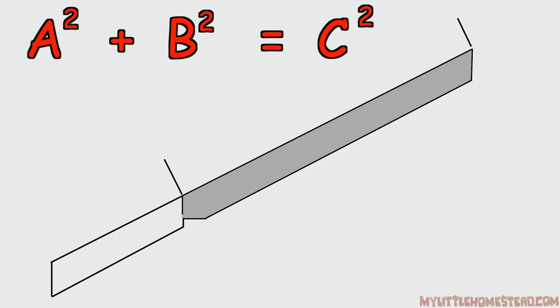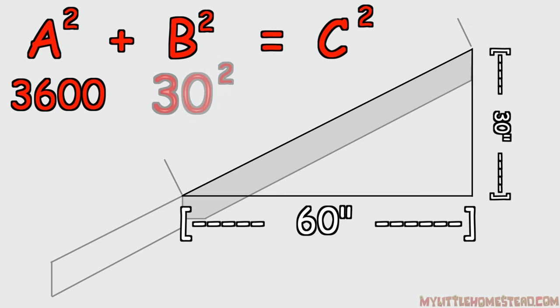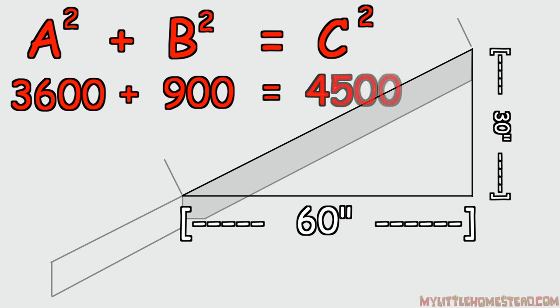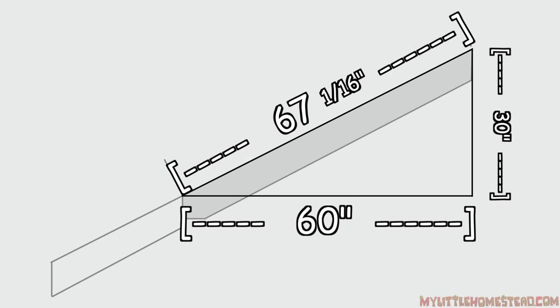Let's do this. The run is 5 feet or 60 inches. 60 times 60 equals 3,600. The rise is 30 inches. 30 times 30 equals 900. That's the b part of the equation. 3,600 plus 900 is 4,500. Now, the square root of 4,500 is 67.082. And, of course, I use the calculator for that one. That is 67 inches. And .082 is really close to that 1/16th.